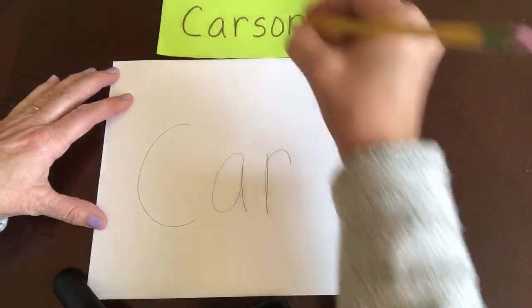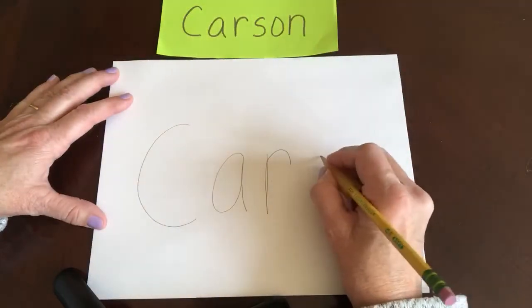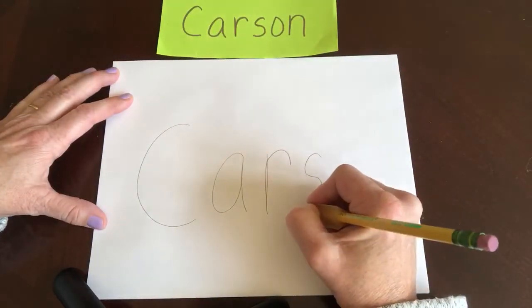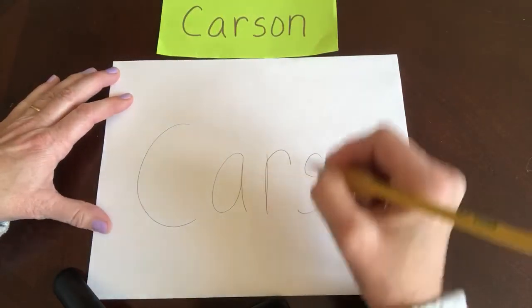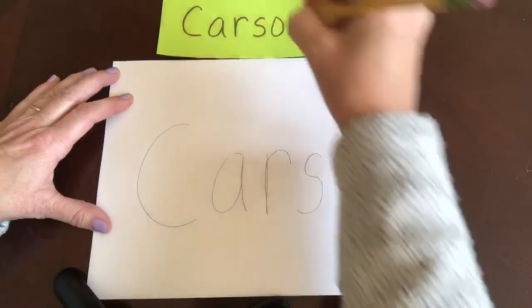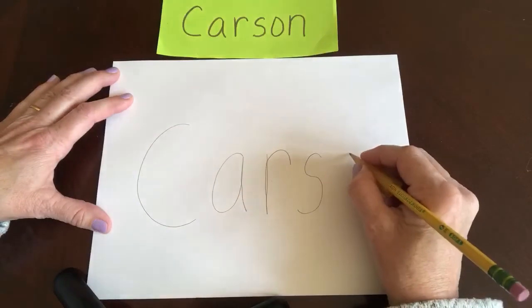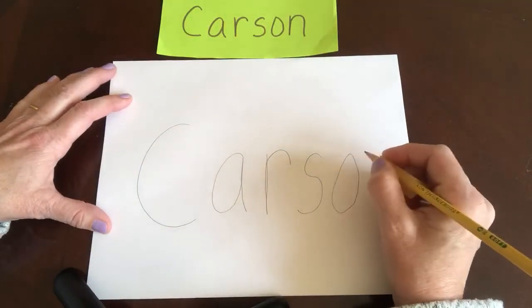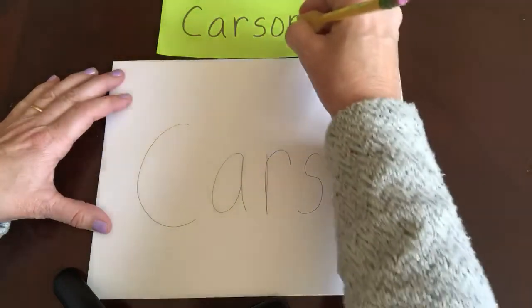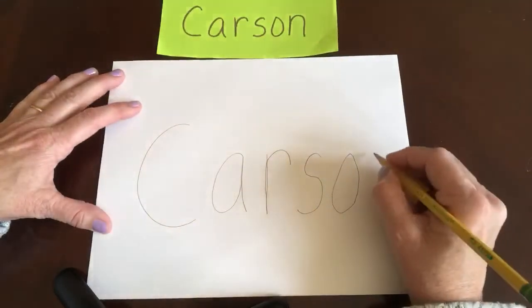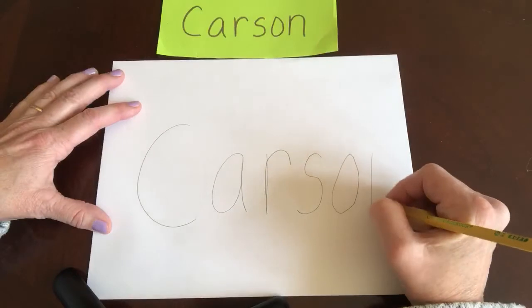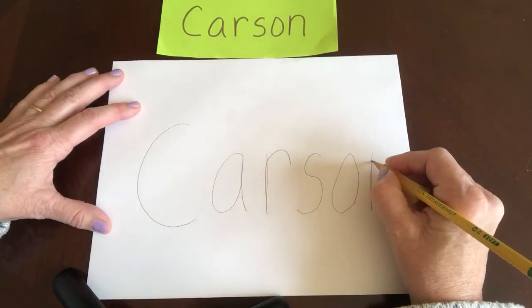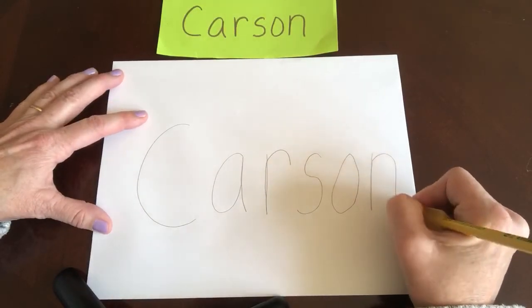S — little curve this way, little curve that way. O — around and stop. N — little lying down, slide back up to the top and over.